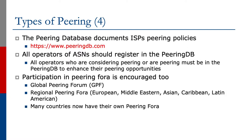The peering database documents ISP peering policies and you can reach it through the URL peeringdb.com. I would advise all operators of autonomous systems to register their details in the PeeringDB, even if the operator is not currently at an internet exchange point. This gives the AS visibility within the peering community, and should the operator come to an exchange point in the future, the entry is visible in the PeeringDB and can be updated as required.